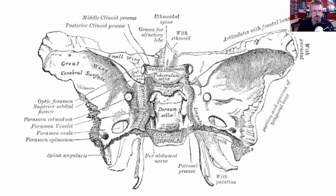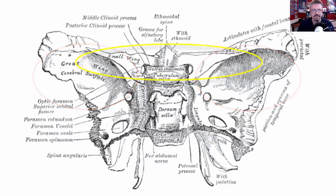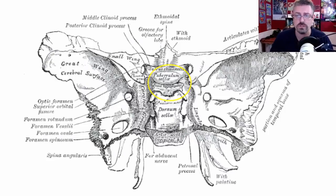Let's take a quick look at what they look like inside the skull. We have the greater wing, the lesser wing, the optic canal — that's where your optic nerve goes through — and the sella turcica. The sella turcica, by the way, translates to "Turkish saddle," and this is where you would find the pituitary.